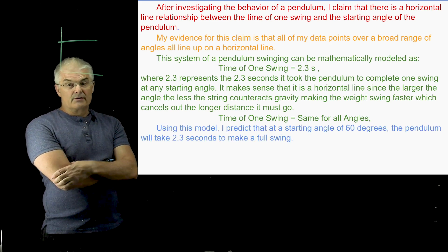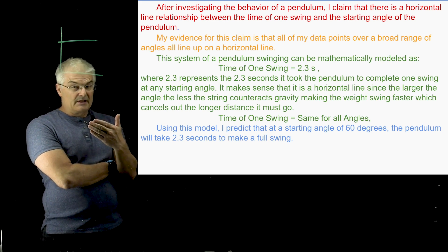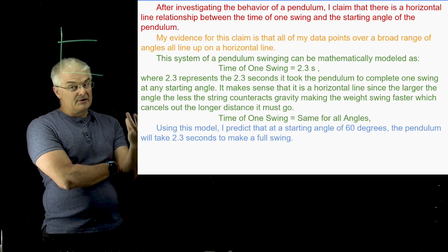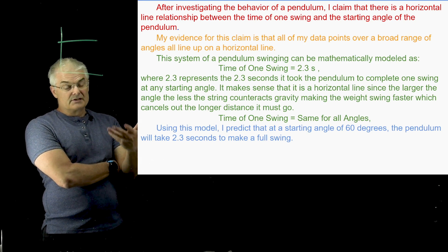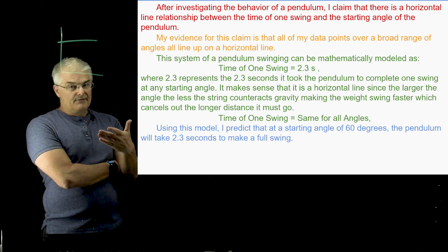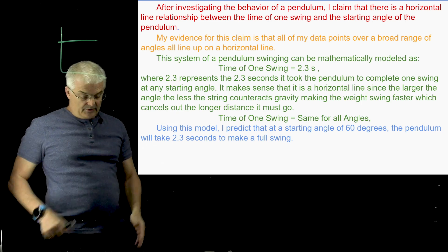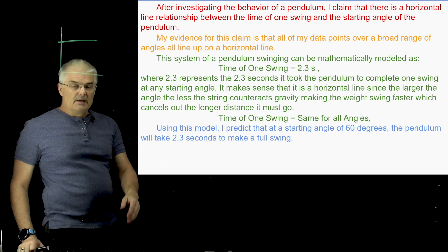So, the next one here is using this model, I predict the prediction that starting at an angle of 60 degrees, the pendulum will take 2.3 seconds like this. Now, if it was a different kind of a relationship, if you would say at 60 degrees, it's going to be some other number.